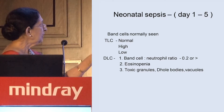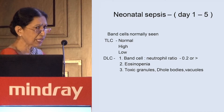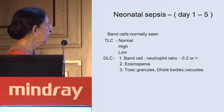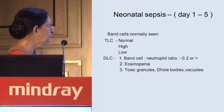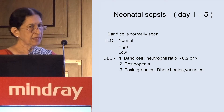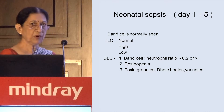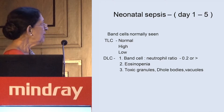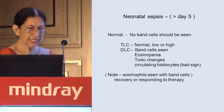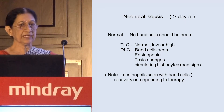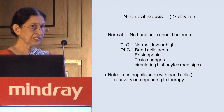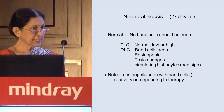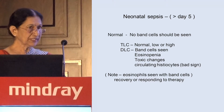Band cells are normally seen in babies; total count may be normal, high, or low. A band cell to neutrophil ratio of 0.2 is taken as significant, coupled with eosinopenia. Toxic changes and Döhle bodies may or may not be present. If the baby is more than five days old, no normal band cells should be there, but if they are still seen along with eosinopenia and toxic changes, the baby is septic.